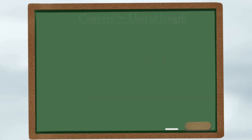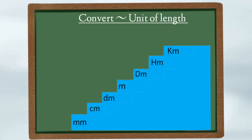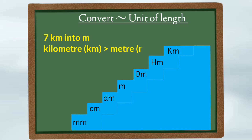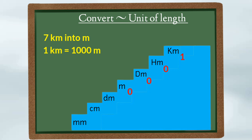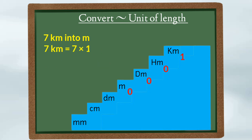Now let's try to convert units of length. Suppose we want to convert 7 kilometers into meters. We need to know: 1 kilometer is equal to how many meters? Since kilometer is a larger unit than meter, we multiply. We put 1 below kilometer and add zeros down to meter — that gives us 1000. So 1 kilometer equals 1000 meters, and therefore 7 kilometers equals 7 × 1000 = 7000 meters.